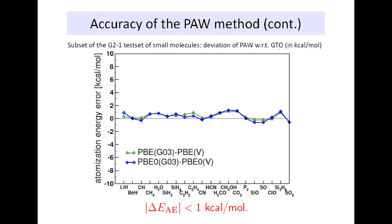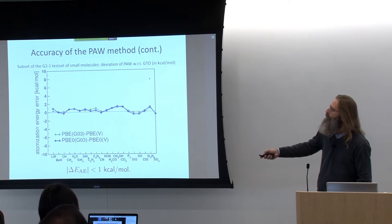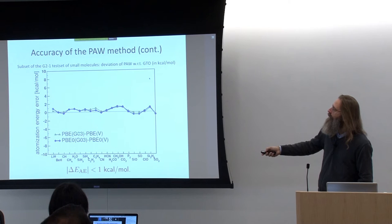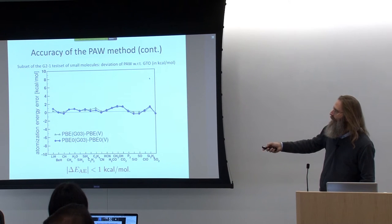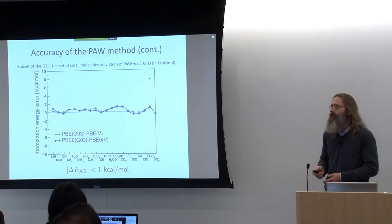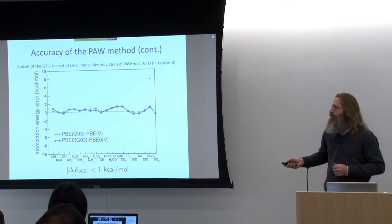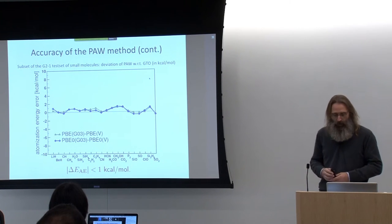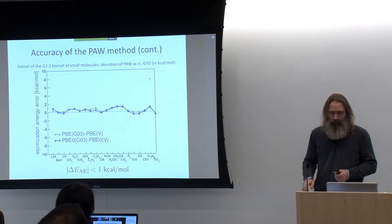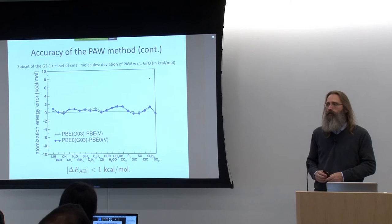There is also a comparison against Gaussian basis set calculations — Gaussian-type orbital calculations — for the G2 test set of small molecules. This was work benchmarking our hybrid functional code. For PBE, the difference between Gaussian and PAW calculations is in almost all cases smaller than one kcal per mole for the atomization energies of these small molecules.